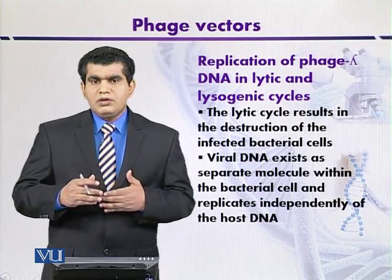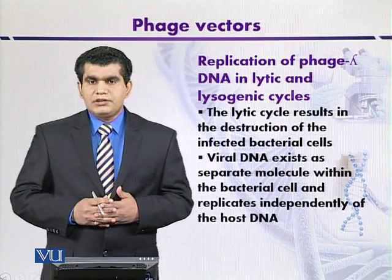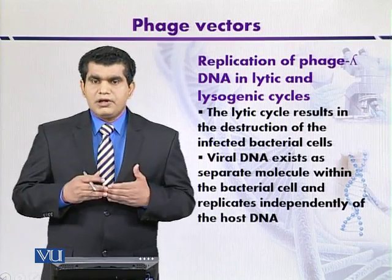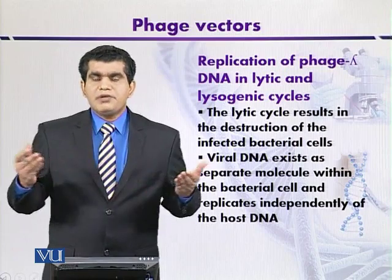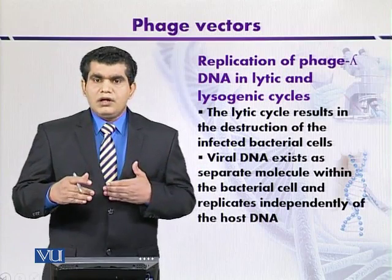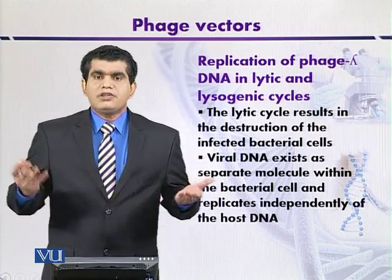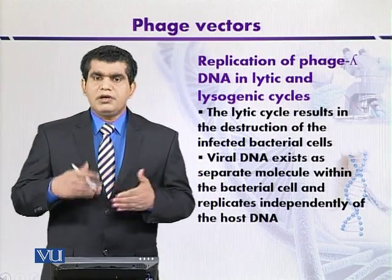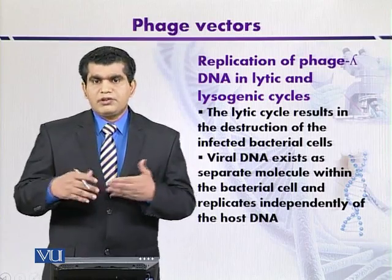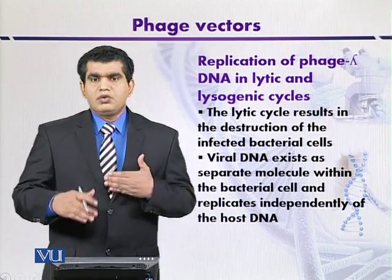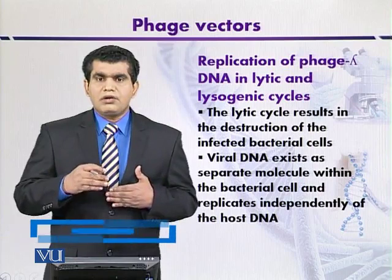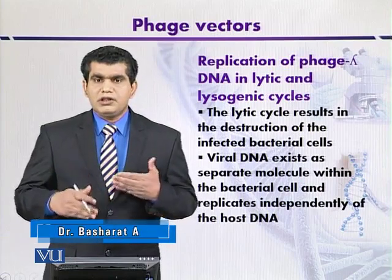One possibility is that the Lambda genome exhibits independent behavior. Because of its own origin of replication, it can replicate. During the process of replication, the host DNA is disintegrated and the genome is enhanced by its number of copies.